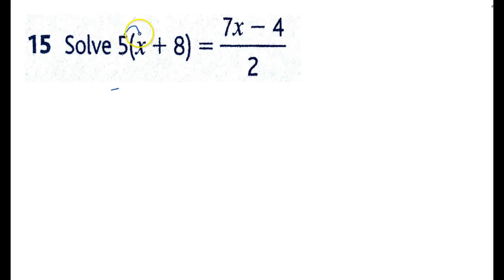Okay, multiply out brackets. 5x plus 40 equals the right-hand side, 7x minus 4 all over 2.